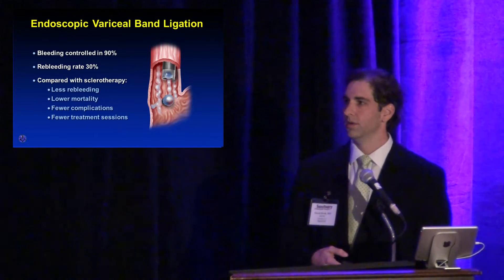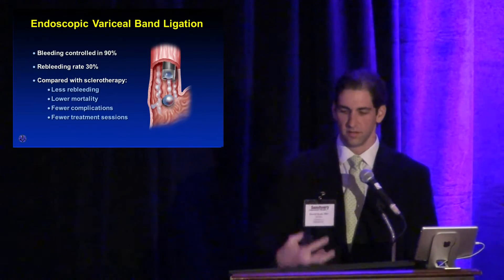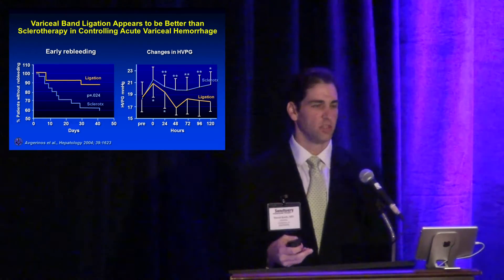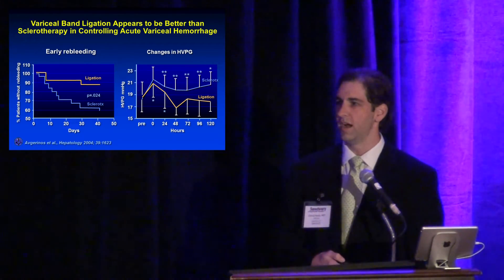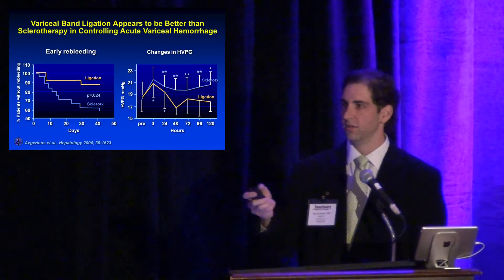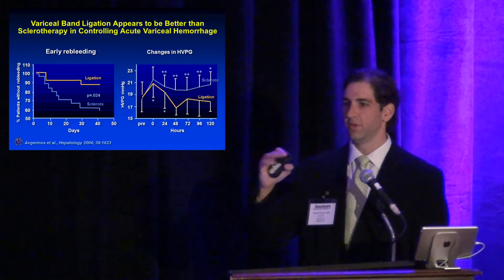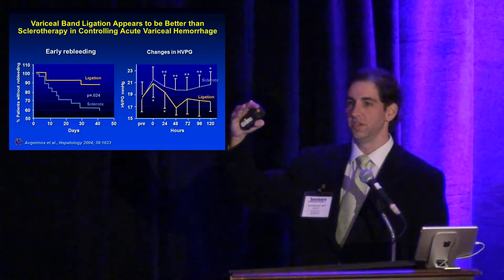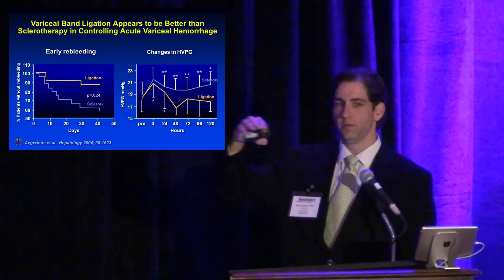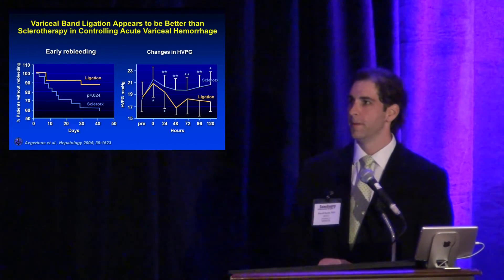Endoscopic therapy for active bleeding involves placing a cap on the end of the scope, suctioning the varix into the cap, and placing a band ligature at the base. Band ligation has replaced sclerotherapy — it is more effective, has fewer complications, and improves survival. Re-bleeding rates with band ligation are much lower than with sclerotherapy. Interestingly, with any endoscopic therapy there is an initial rise in HVPG during the procedure, but patients who received sclerotherapy had persistently higher HVPG compared to band ligation, which may contribute to re-bleeding risk.